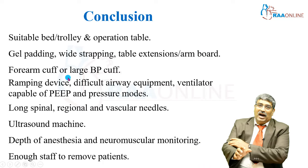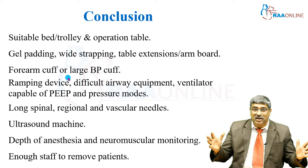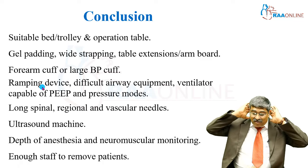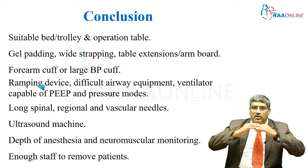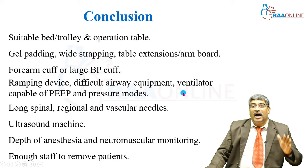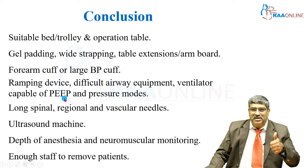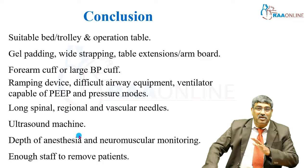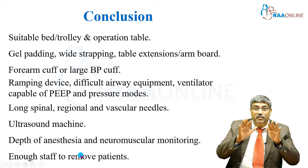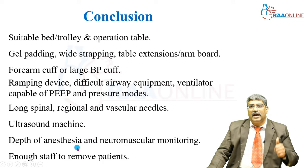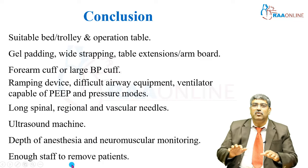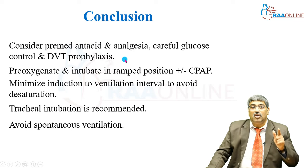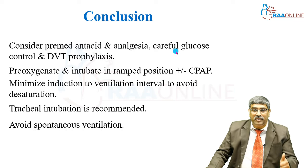A forearm cuff or large BP cuff is needed; sometimes invasive monitoring is required because the cuff size may not be sufficient to measure blood pressure. A ramp for the airway with enough padding to align the pharyngeal and laryngeal axes. Difficult airway equipment and a ventilator providing PEEP and pressure-ventilatory modes. Long spinal, regional, and vascular needles, plus an ultrasound machine due to anatomical distortion. Neuromuscular monitoring and depth-of-anesthesia monitoring are needed, along with enough staff to move the patient. Also consider pre-medication with antacid, good analgesia, tight glucose control, and DVT prophylaxis.